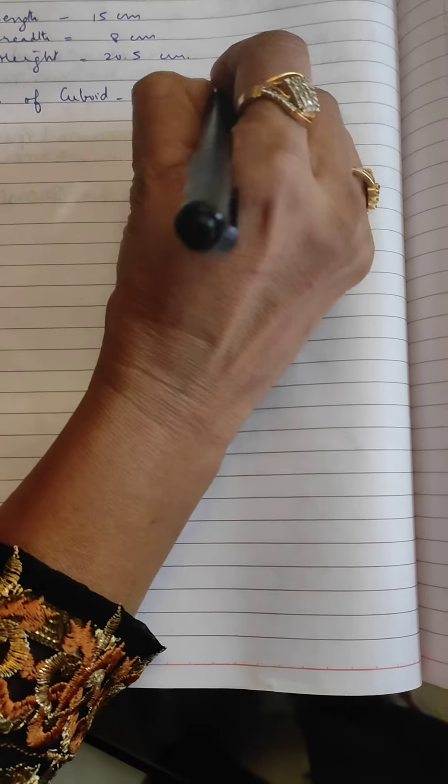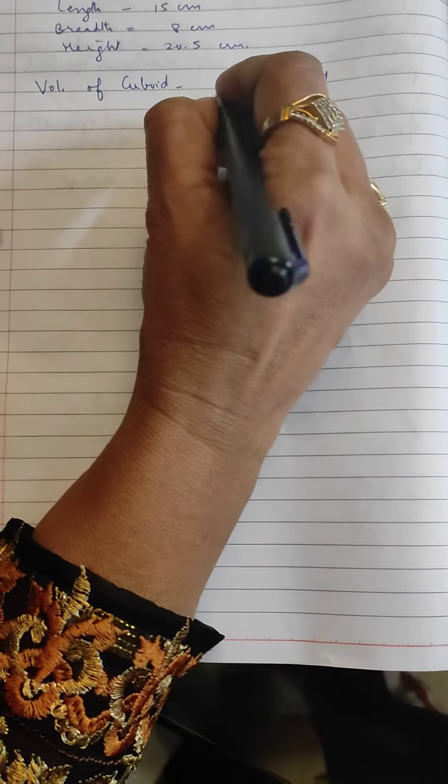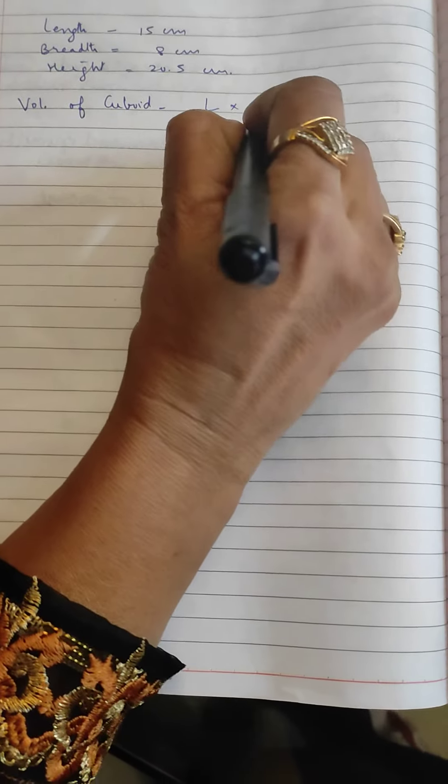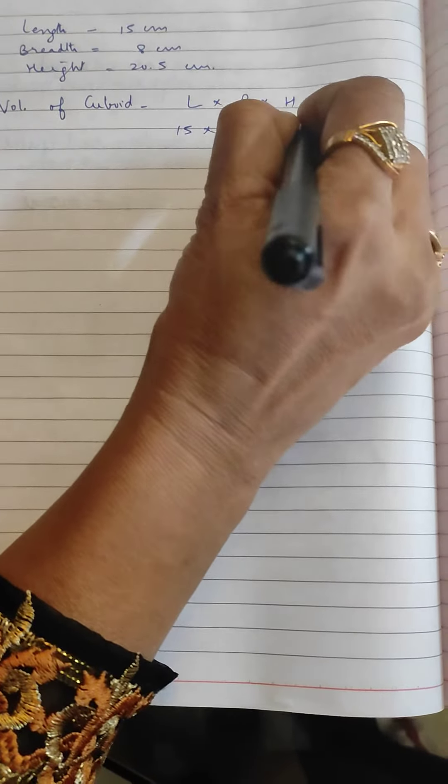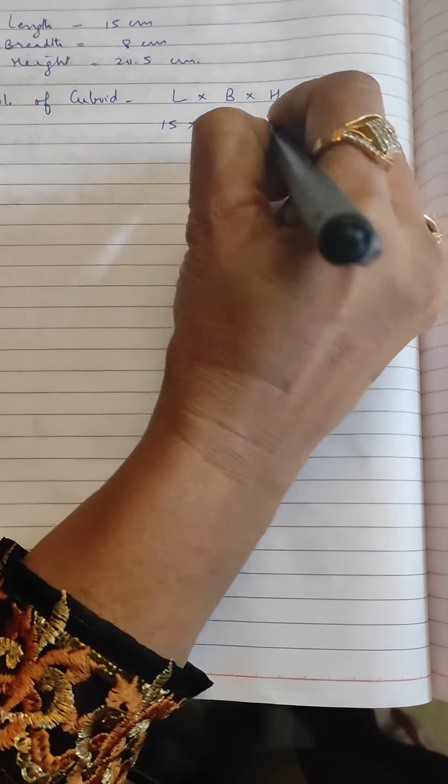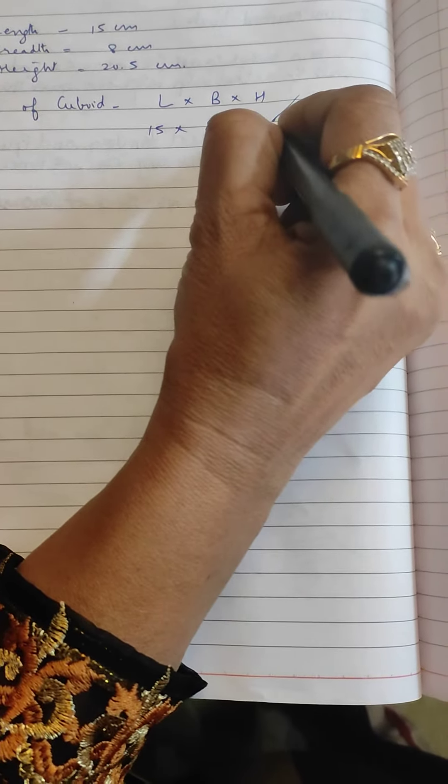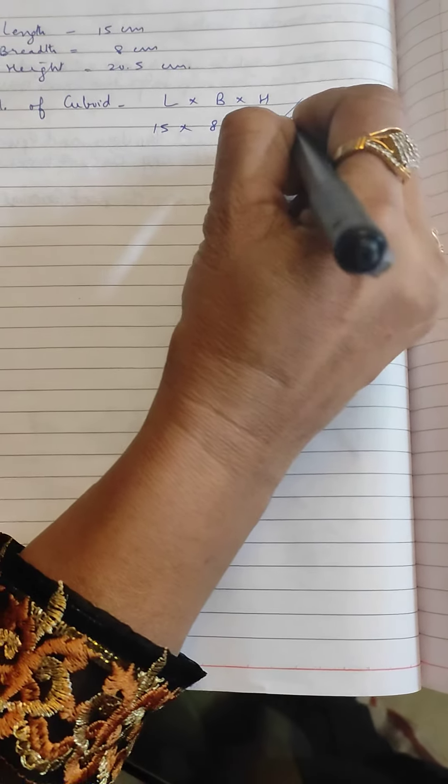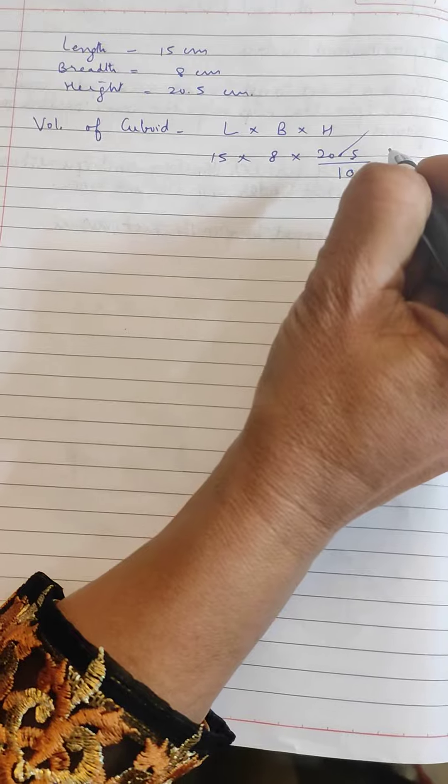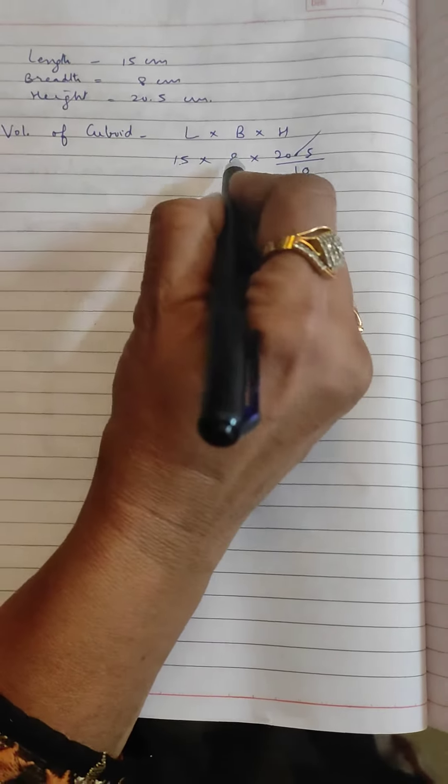Now we need to fill the values in them: 15 multiplied by 8 multiplied by 20.5. First of all, we need to solve the point. We'll cut this point and write one under this point, and how many numbers are there? One number, so we'll write one zero under that. Now we will multiply these three.